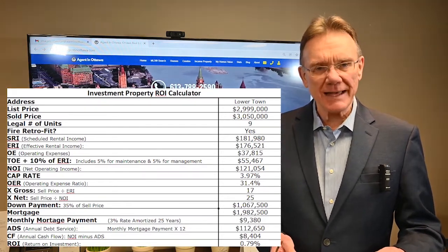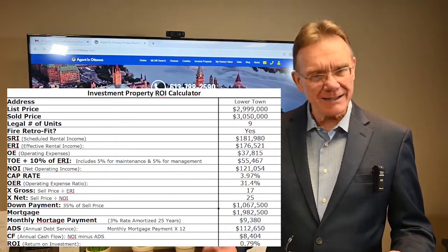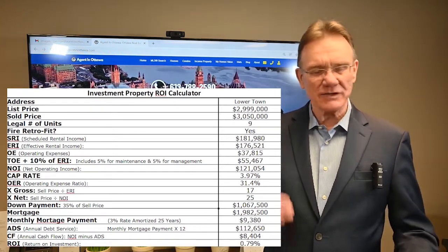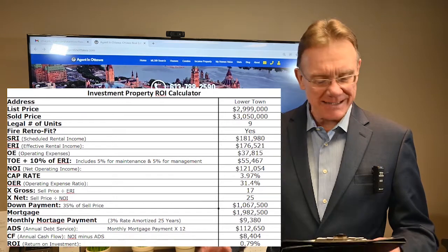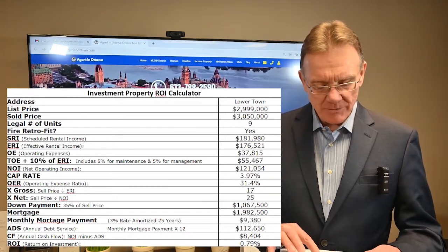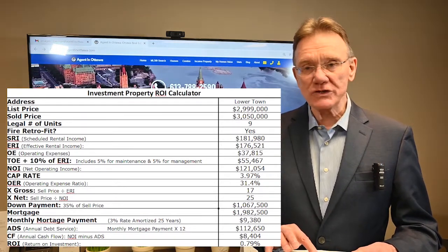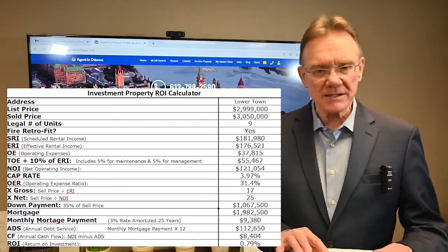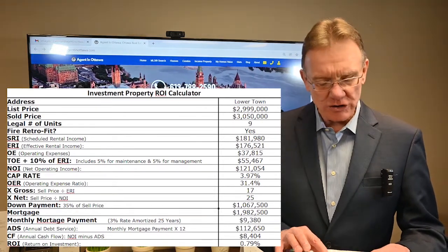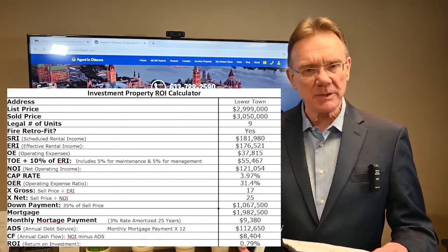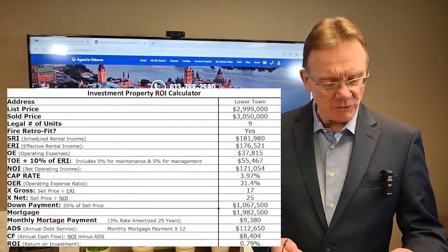So the net operating income is one hundred and twenty-one thousand dollars. Now that we have the NOI and the selling price, we can calculate the capitalization rate — in this case, almost four percent. That's about average to good, and it indicates the property probably had a positive cash flow.